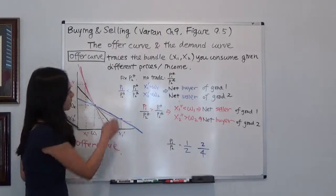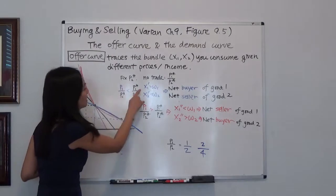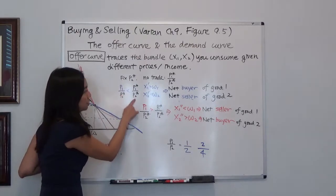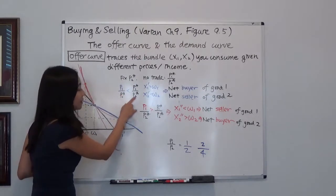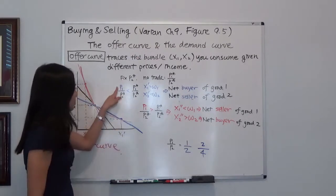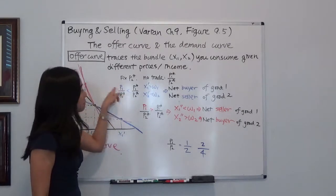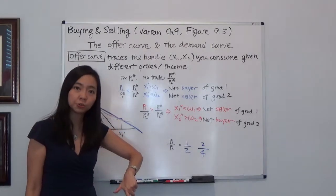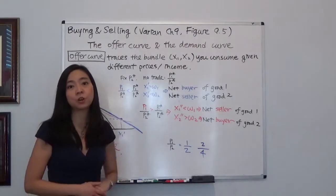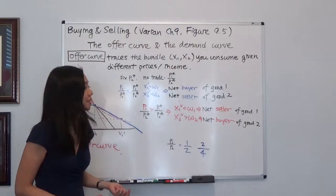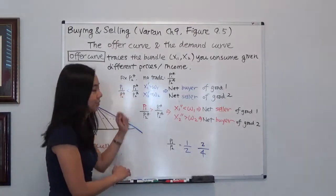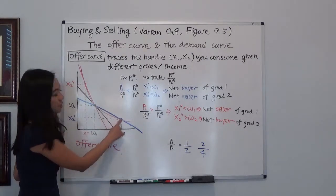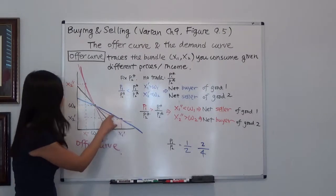Suppose the price of good 1 goes down so P1 is lower than P1 star, our original price, whereas the price of good 2 doesn't change. In that case, because the price of good 1 has gone down, it makes sense for you to buy more good 1 and sell your good 2 because now the price of good 2 is relatively higher than before. We're talking about relative price. You are going to consume a bundle where you have more good 1 and less good 2.